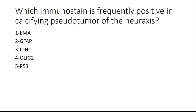Question 3: Which immunostain is frequently positive in calcifying pseudoneoplasm of the neural axis? Options: EMA, GFAP, IDH1, Olig2, or P53. The answer is EMA. Those palisading cells at the periphery of the nodules are frequently EMA positive. It's important not to mistake this for meningioma, which has metaplastic subtypes that can contain cartilage or bone — calcifying pseudoneoplasm is a distinctly different type of lesion.